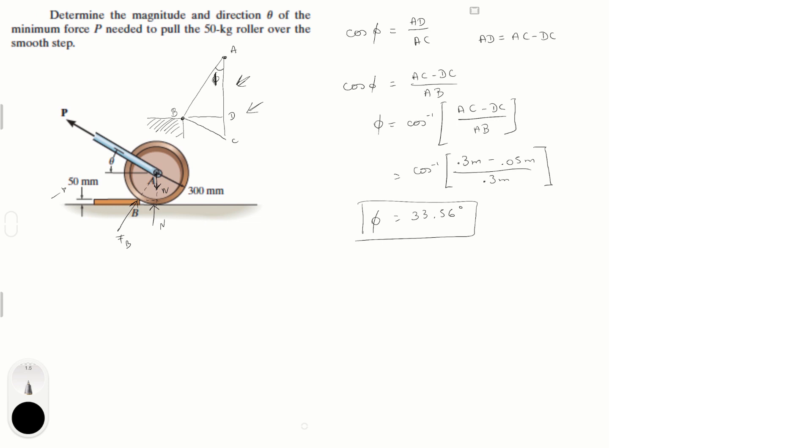Now we have to understand the second part. We know that the sum of the moments at B is equal to 0. And we know that the moment that the roller starts going over the step, this normal is equal to 0. That's important to know too.